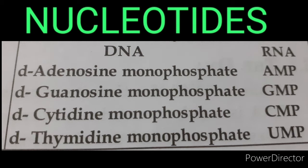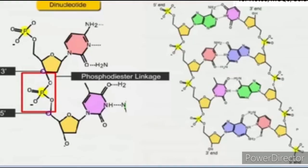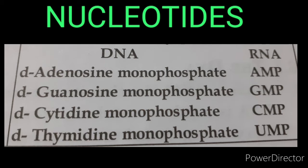A nucleotide is formed when a phosphate group is linked to a nucleoside through a phosphoester linkage. That means: nucleoside plus phosphoric acid forms a nucleotide. In DNA, deoxyadenosine combined with phosphoric acid forms deoxyadenosine monophosphate, also called adenylic acid. Deoxyguanosine combined with phosphoric acid forms deoxyguanosine monophosphate, also called guanylic acid.